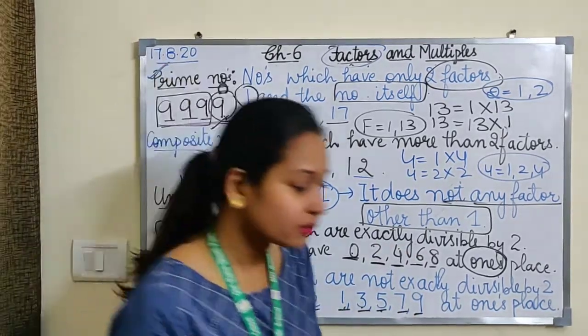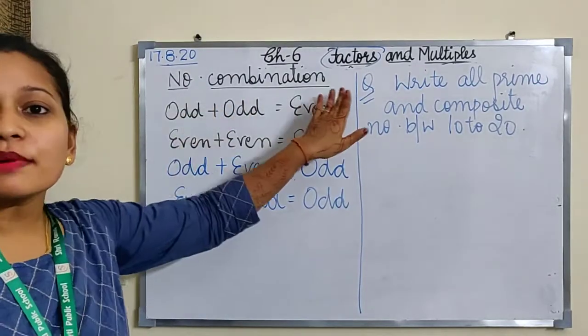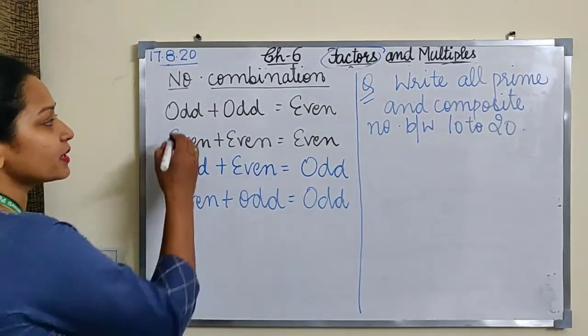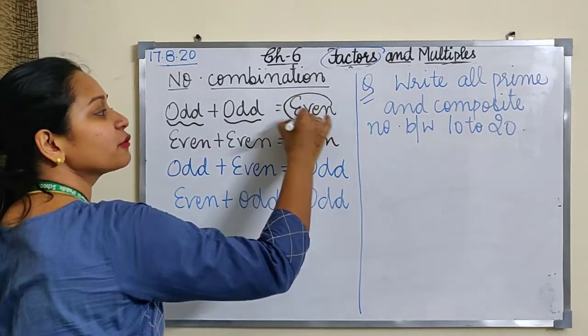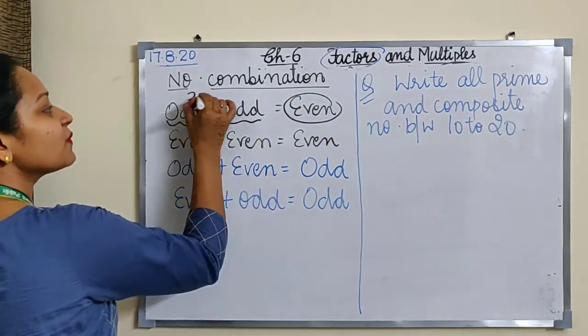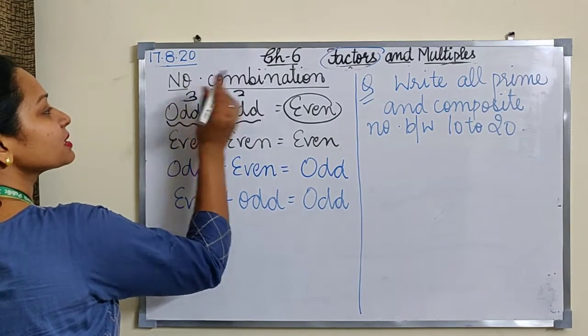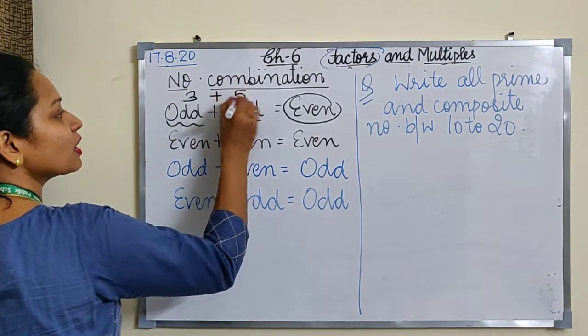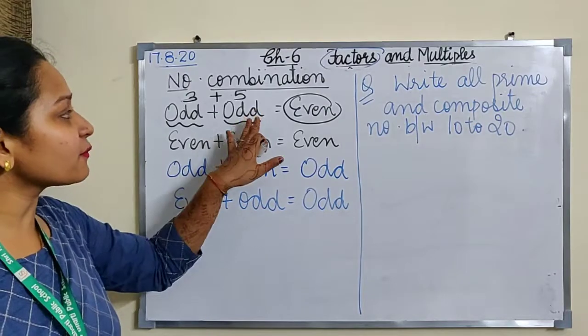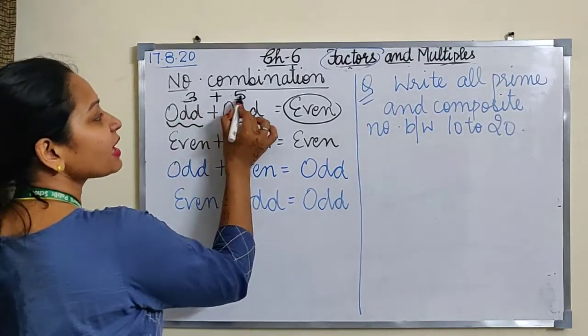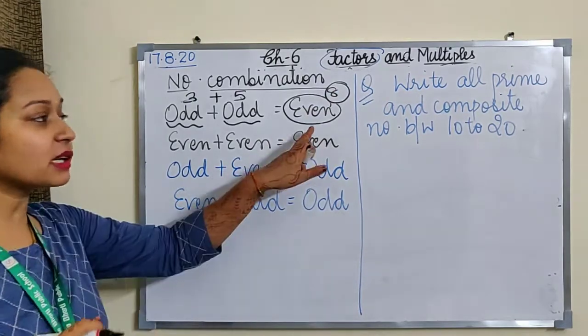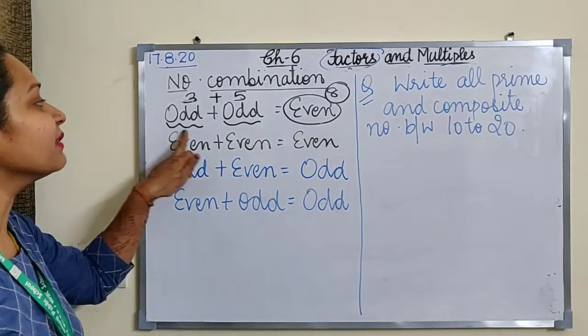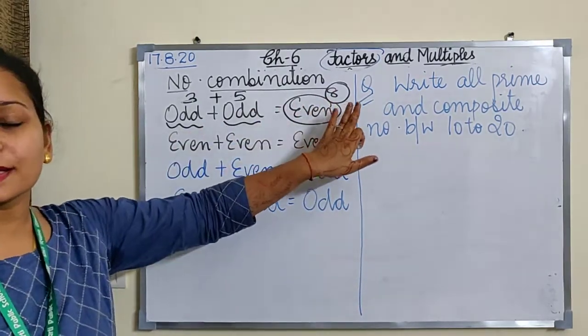Let's look at the next question. Next is number combination. What is number combination? If I add 2 odd numbers, then it will give me an even number. Let's see, if I add 3 plus 5, both are odd numbers. If I add both the numbers, it will give me 8, an even number. This is in every case. Whenever I add 2 odd numbers, it will give me an even number.